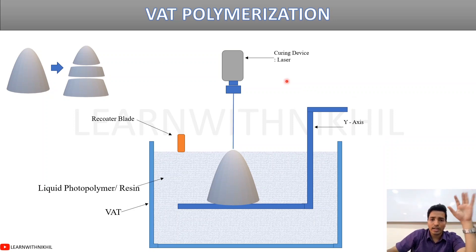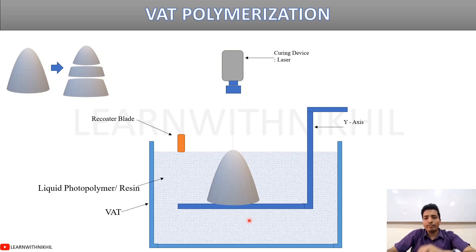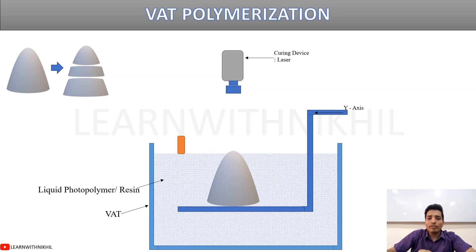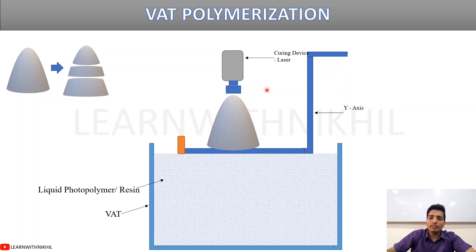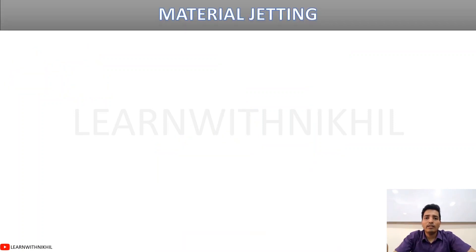To summarize vat photopolymerization: you have a container called a vat filled with liquid resin, a laser source that solidifies wherever it strikes, and a build platform that moves downward layer by layer. When the entire part is made, you pull it upward out of the vat to retrieve the finished object.